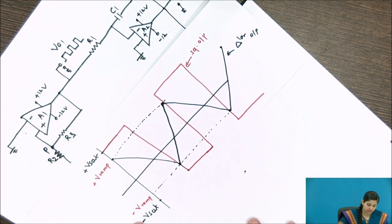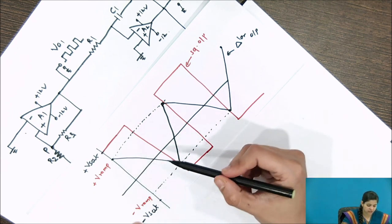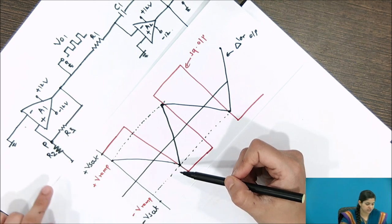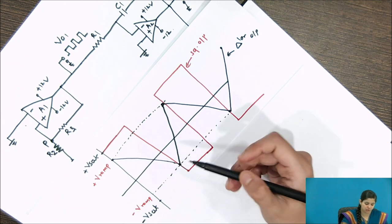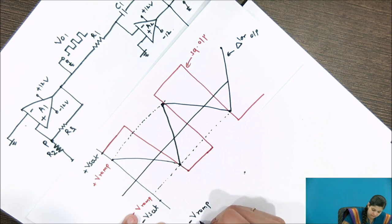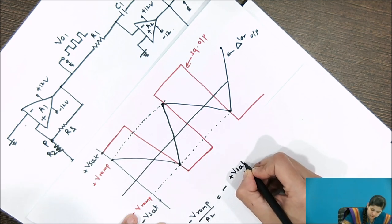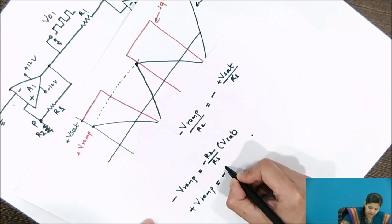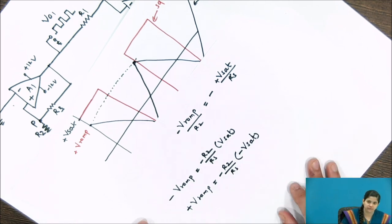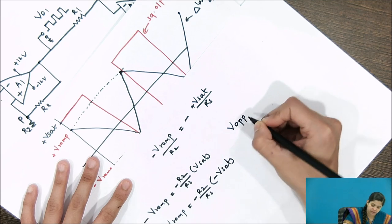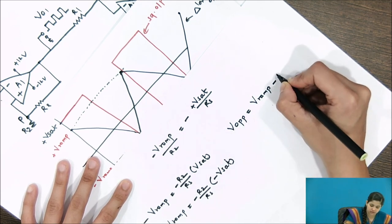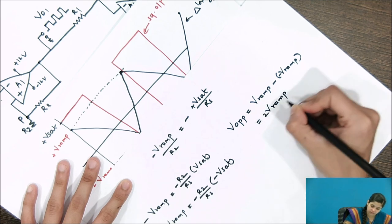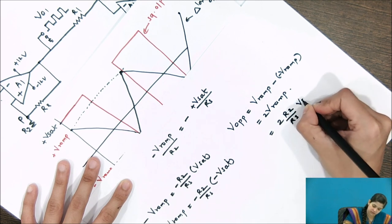When the output transitions from positive ramp voltage to negative ramp, the positive saturation voltage is applied through R3 and the negative VRAMP appears at R2, making P equal to 0V. The equation can be written as: VRAMP / R2 = −Vsat / R3. Therefore, the positive ramp voltage equals −(R2/R3) × (−Vsat). The peak-to-peak output voltage is the difference between the two ramp voltages, giving Vpp = (R2/R3) × Vsat.